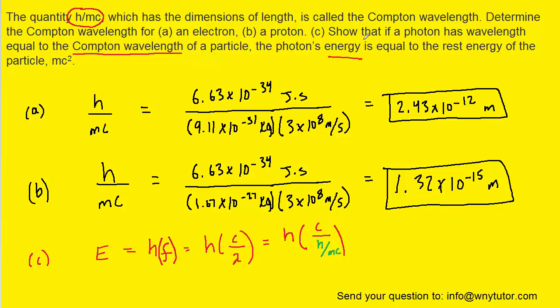And then we can see that the Planck's constants will cancel. And so we're left with C divided by 1 divided by mc. And in order to divide by a fraction, we can actually multiply by the reciprocal.